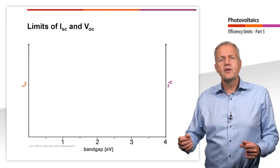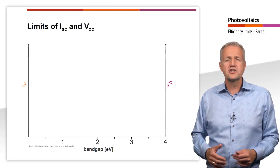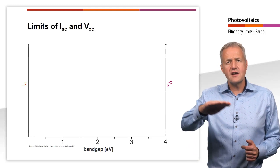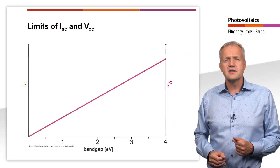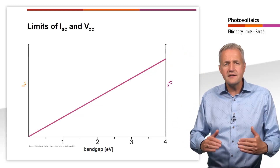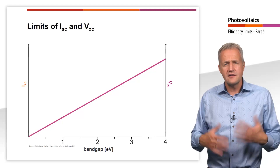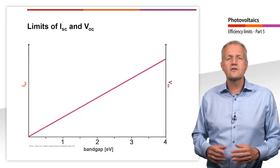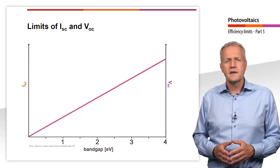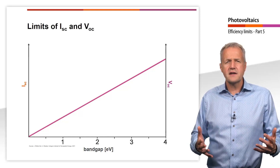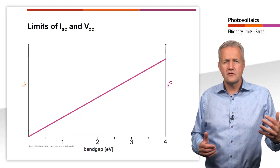The larger the band gap, the larger the potential barrier between the conduction and valence band, and thus also the voltage that the solar cell can deliver. The open-circuit voltage therefore rises almost linearly with the band gap energy. The short-circuit current depends on the number of electrons that are raised into the conduction band. The solar spectrum contains photons with different energies. Thus, in order for the very low energy photons to contribute to the photoelectric effect, the band gap would have to be small. On the other hand, the larger the band gap, the lower the short-circuit current, since fewer photons contribute to the photoelectric effect.